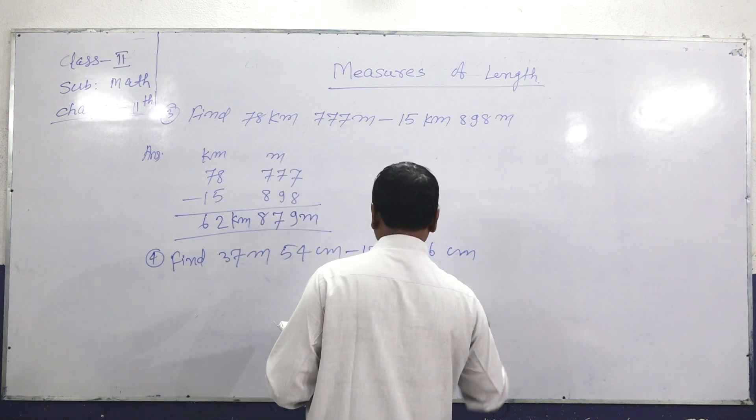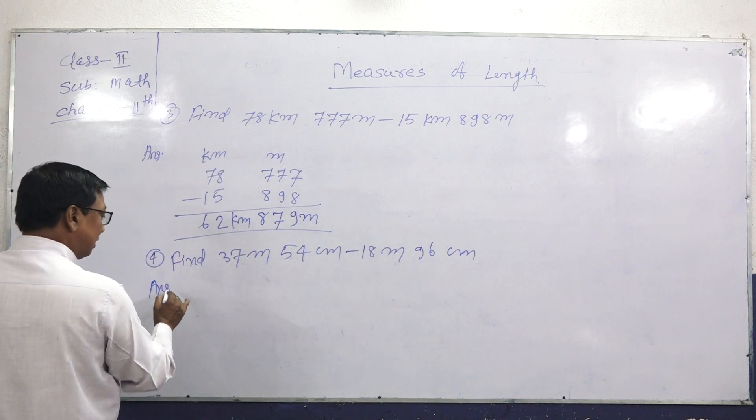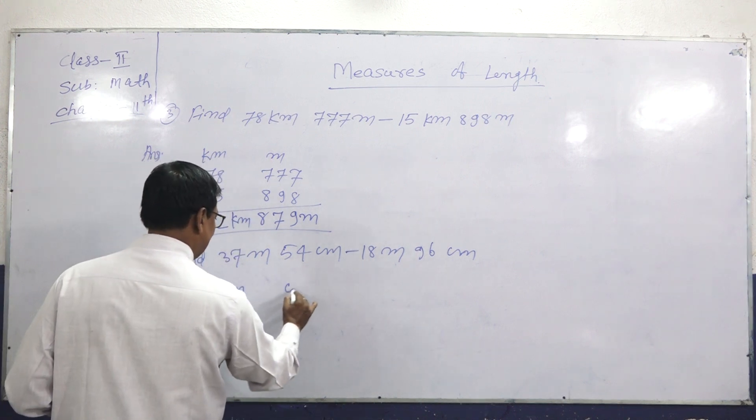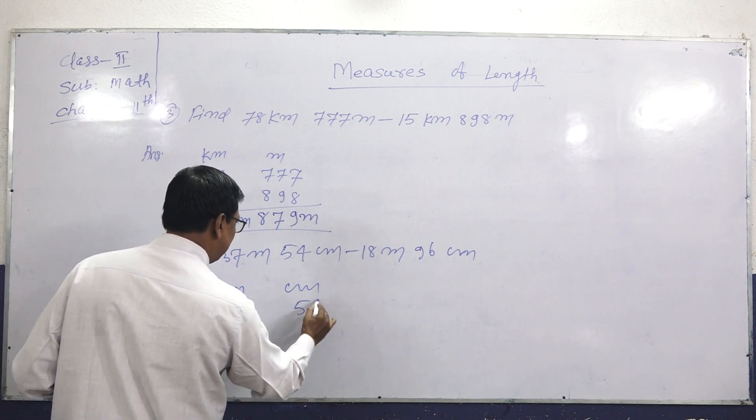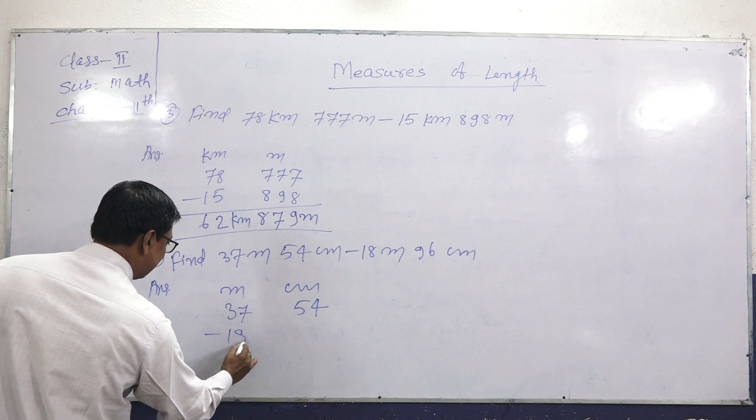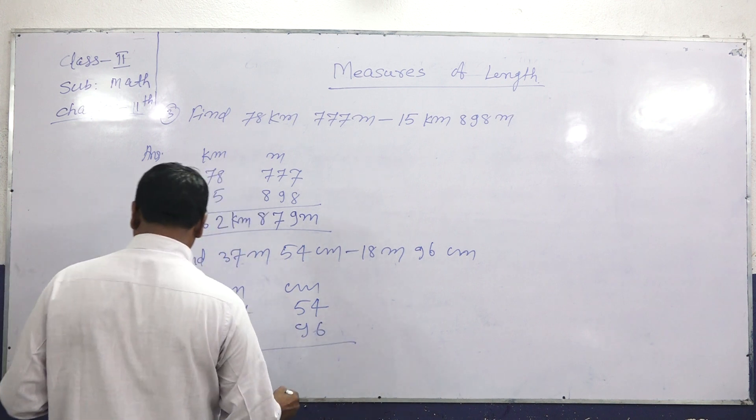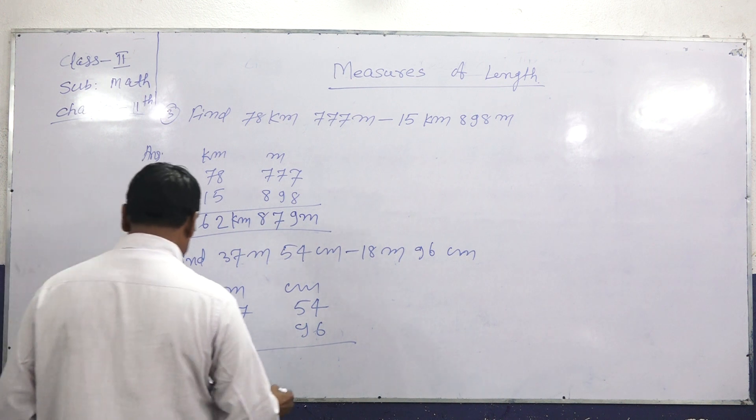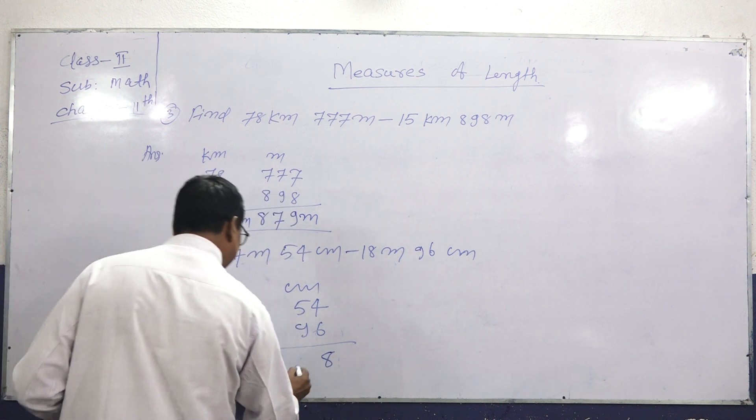Final question. 37 meters, 54 centimeters minus 18 meters, 96 centimeters. 37 meters 54 cm minus 18 meters 96 cm. Here, 54 is less than 96, so we borrow.